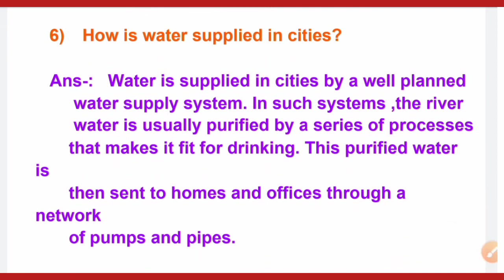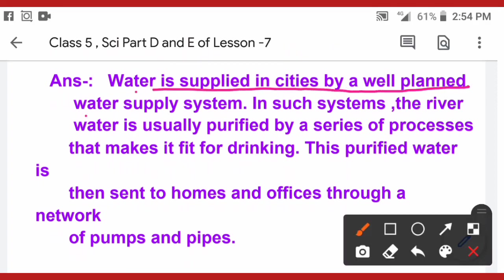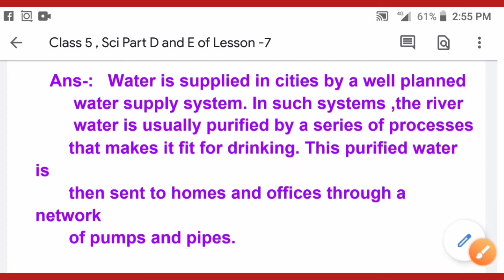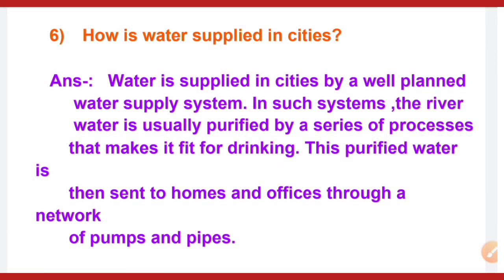The last question: how is water supplied in cities? Water is supplied in cities by a well-planned water supply system. The river water is usually purified by a series of processes that make it fit for drinking, and is then sent to homes and offices through a network of pumps and pipes. Dear students, you will complete Part D and E of lesson number 7 in your science fair notebooks. Thank you.